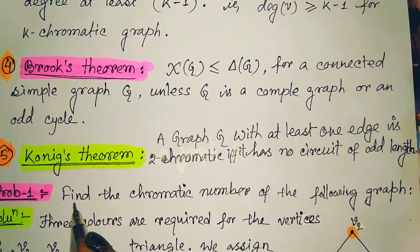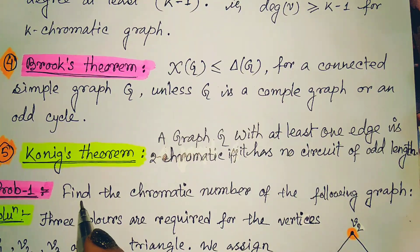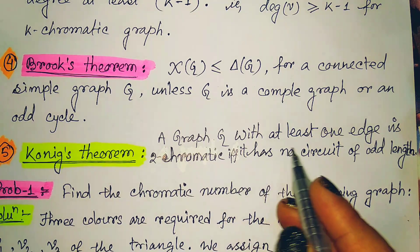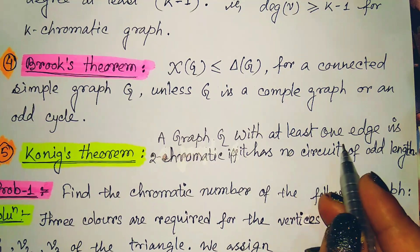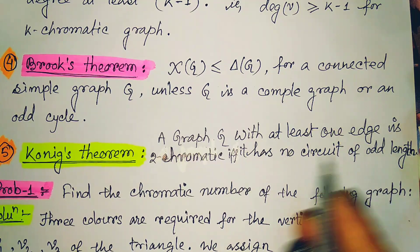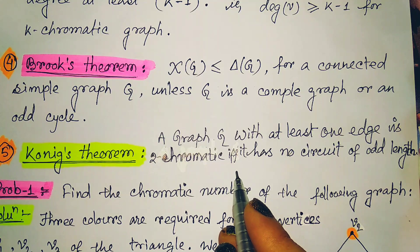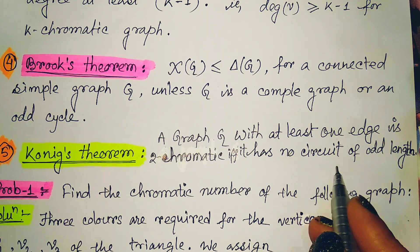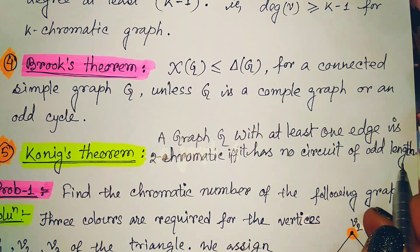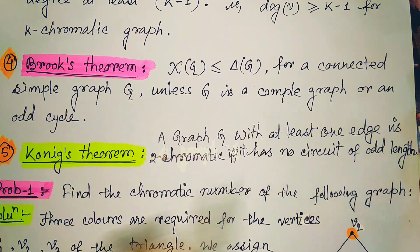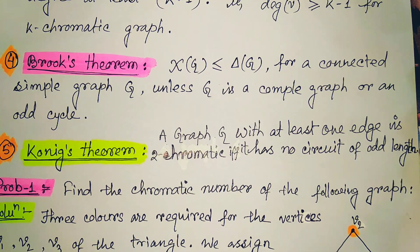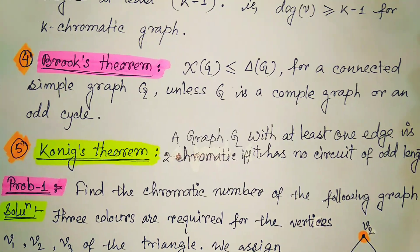Next is König's theorem. König's theorem states that a graph G with at least one edge is 2-chromatic if and only if it has no circuit of odd length. These are the theorems we should know before solving problems on chromatic number.